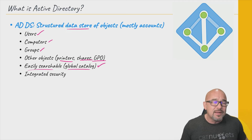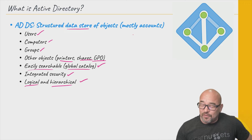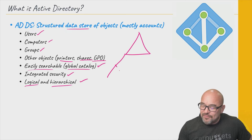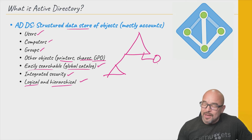Active Directory by its very nature is logical and hierarchical. For example, you might have at the top of your domain — normally domains are represented by a triangle — and you may have domains that have child domains, like a subdomain or child domain that appears underneath. Within this, you'll also have things such as organizational units. An organizational unit might be a state or a city — let's say this is Phoenix.